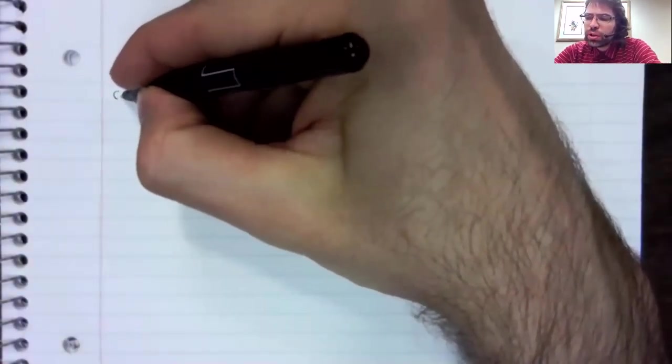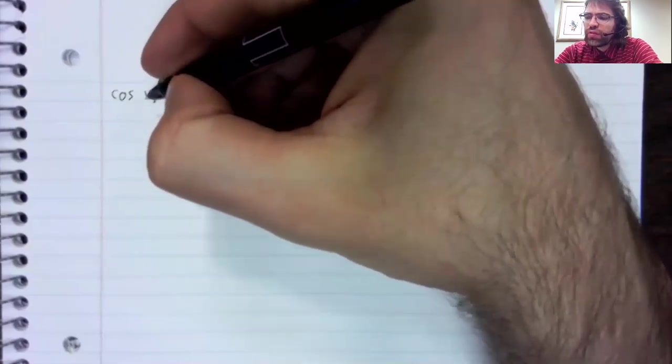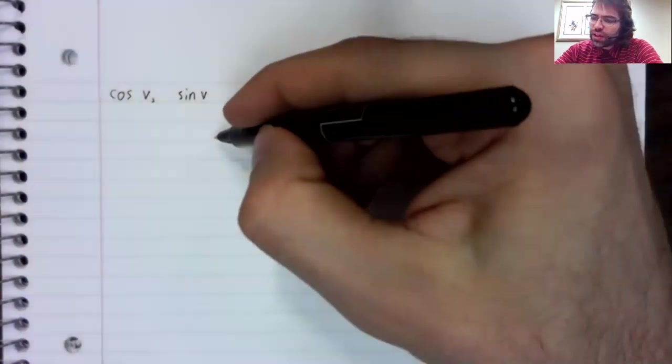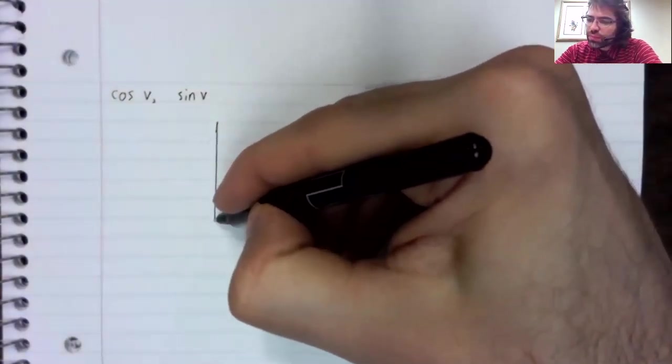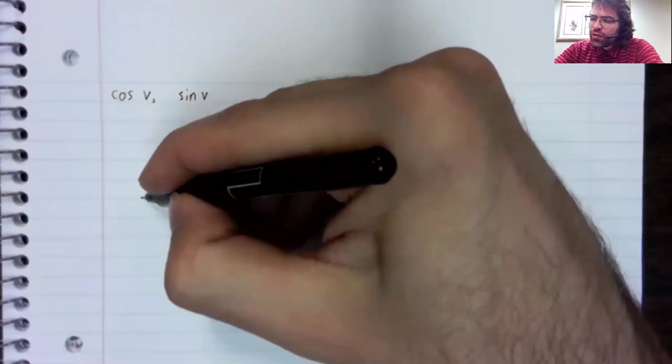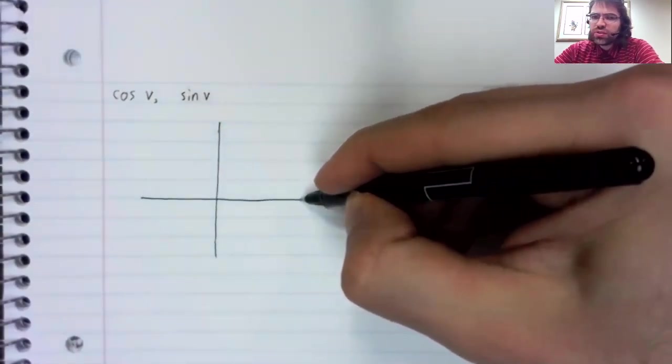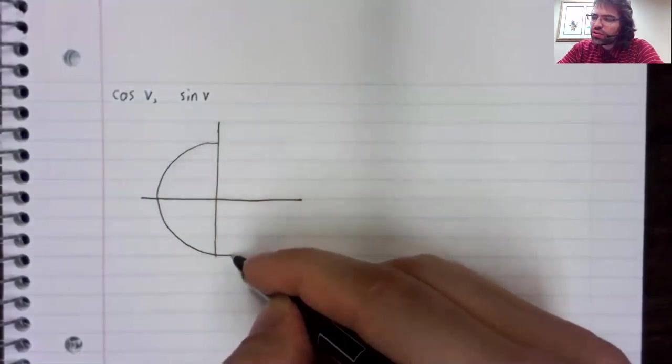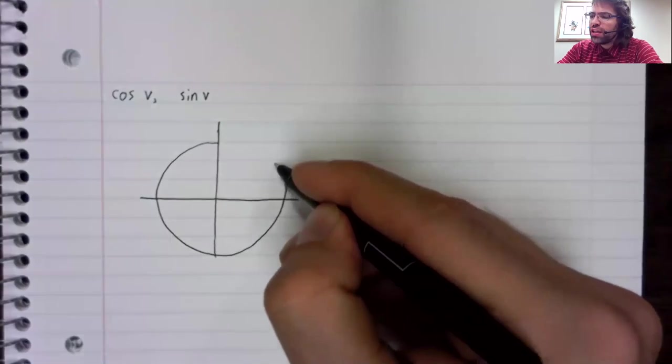Let's talk about the domain and the range of the cosine and the sine. Let's do domain first, and we'll look at the cosine of v and the sine of v. V doesn't have a degree symbol next to it, so we're thinking of v as being measured in radians.